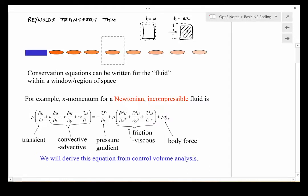For some property phi, we'd say that dm·phi/dt in the system representation—that is, the stuff that we're tracking all the mass of—is equal to dm·phi/dt of the control volume.